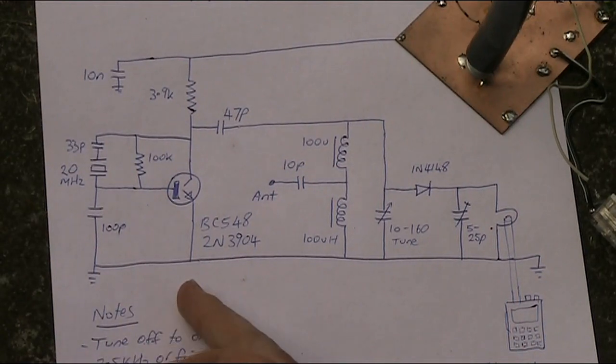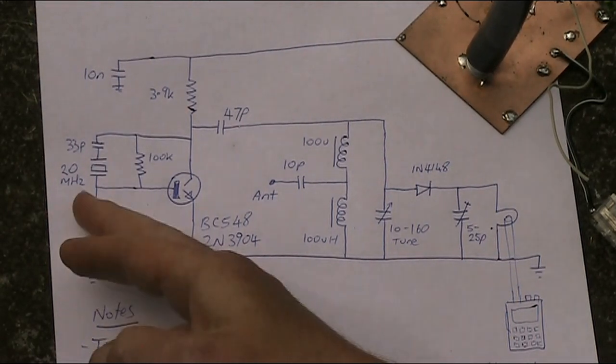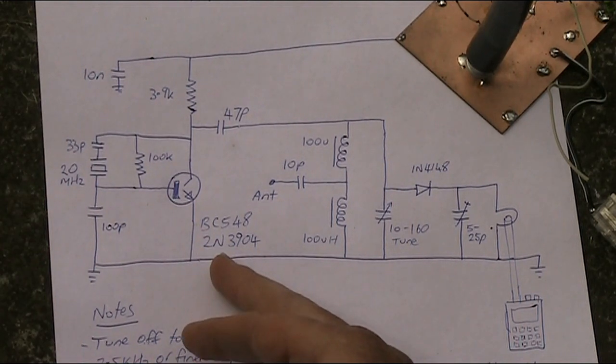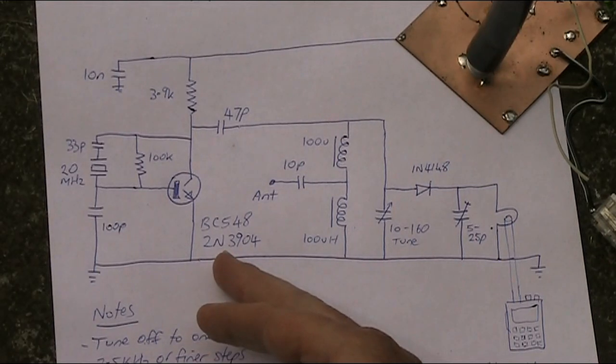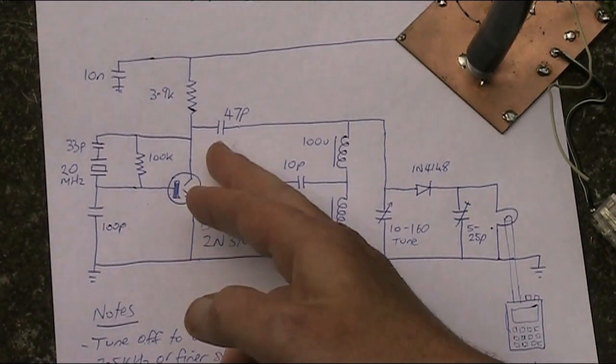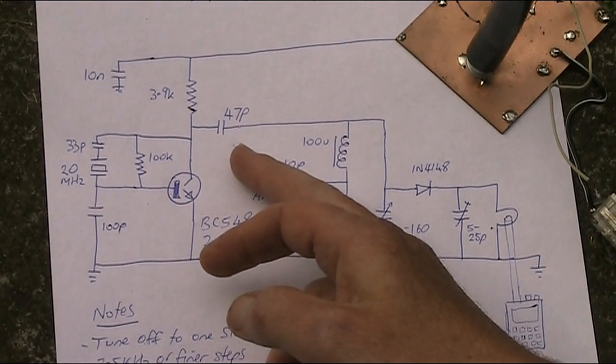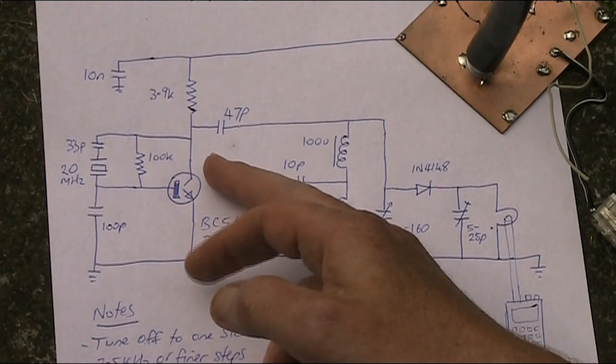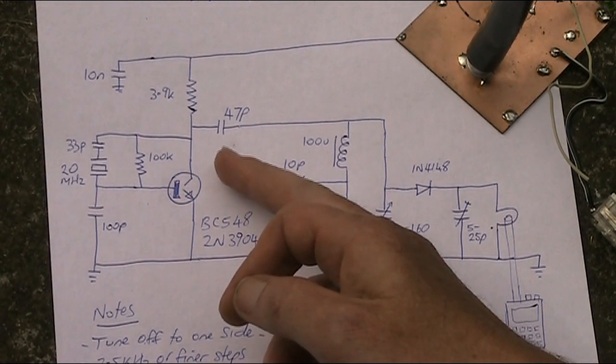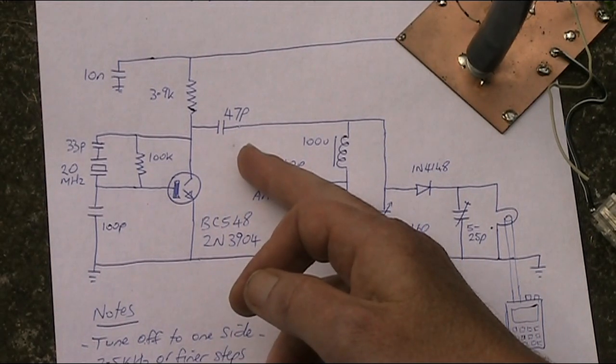On the left is a one transistor crystal oscillator, using a Pierce configuration. It uses a 20 megahertz crystal and a simple NPN transistor. Something like a BC548 or 2N3904 would be okay. Now, there's no filtering here, so the output is rich in harmonics. That means that not only will there be a signal on 20 megahertz, but also going all the way up, like 40, 60, 80, 100, 120, 140, and 160 megahertz, and even higher.